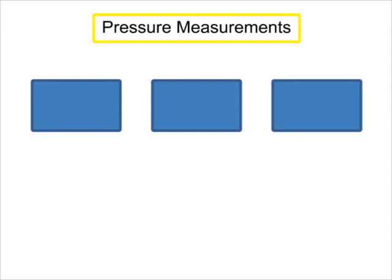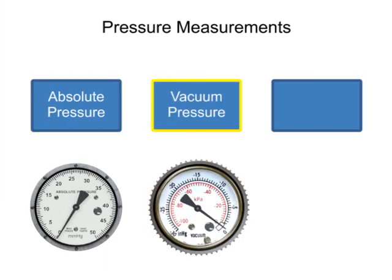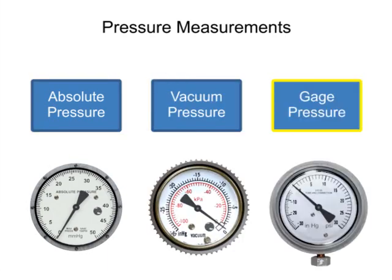Pressure measurements show pressure values that are compared to a reference point. Common scales for pressure measurements include absolute pressure, vacuum pressure, and gauge pressure, and are characterized by the reference pressure used.